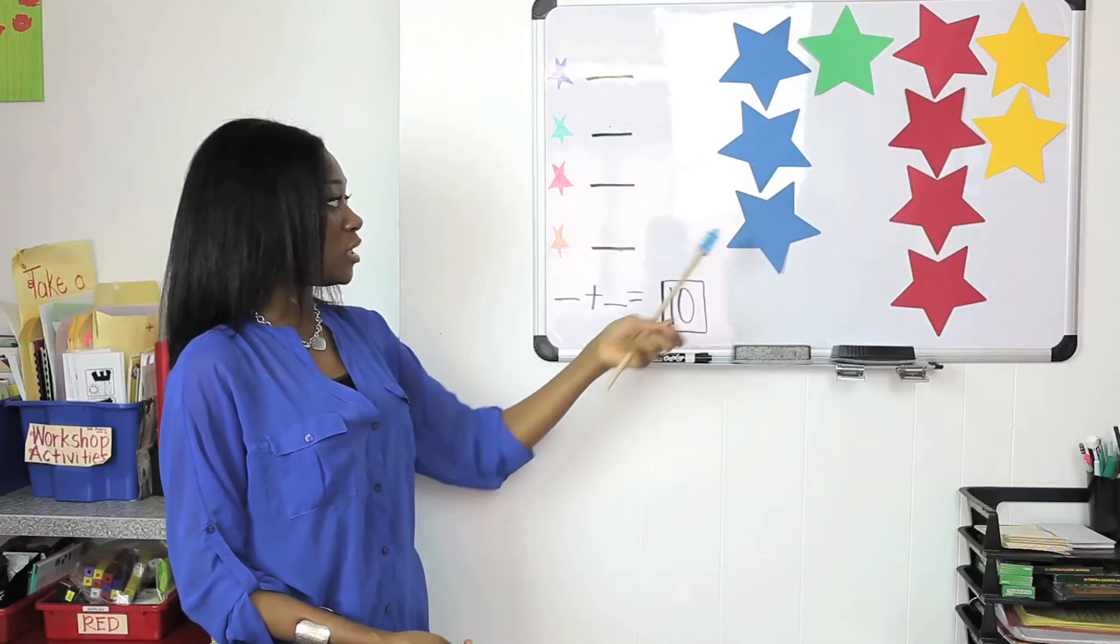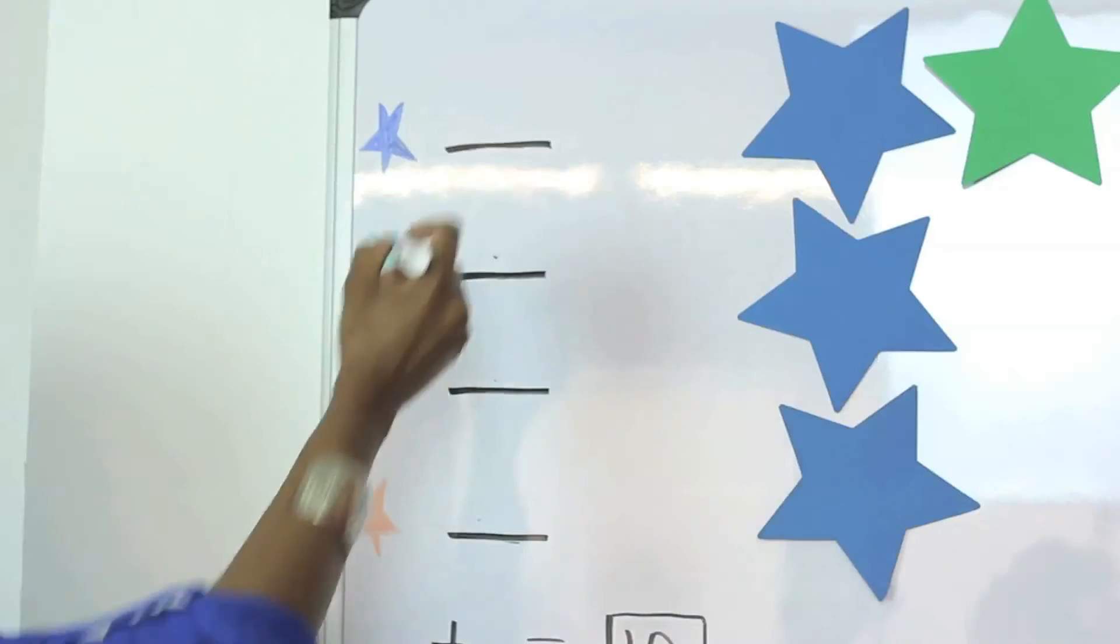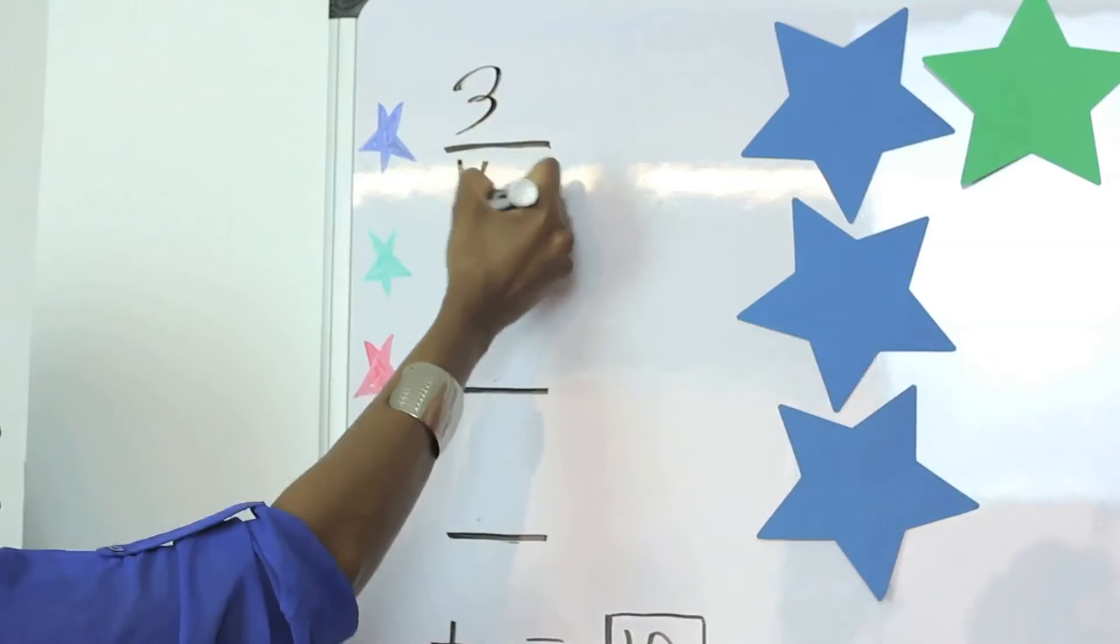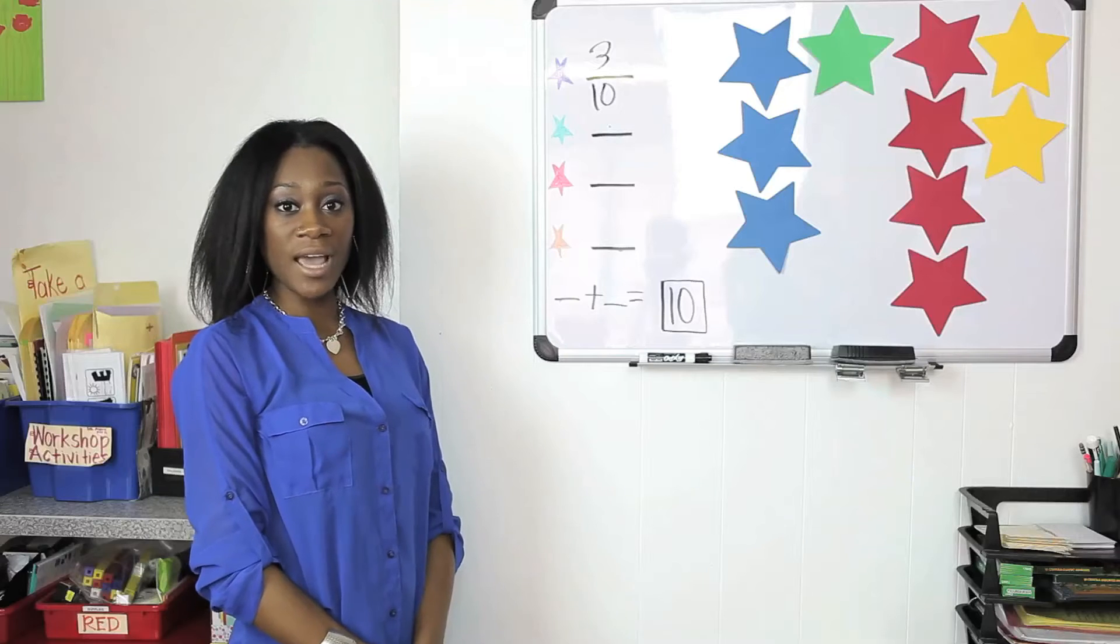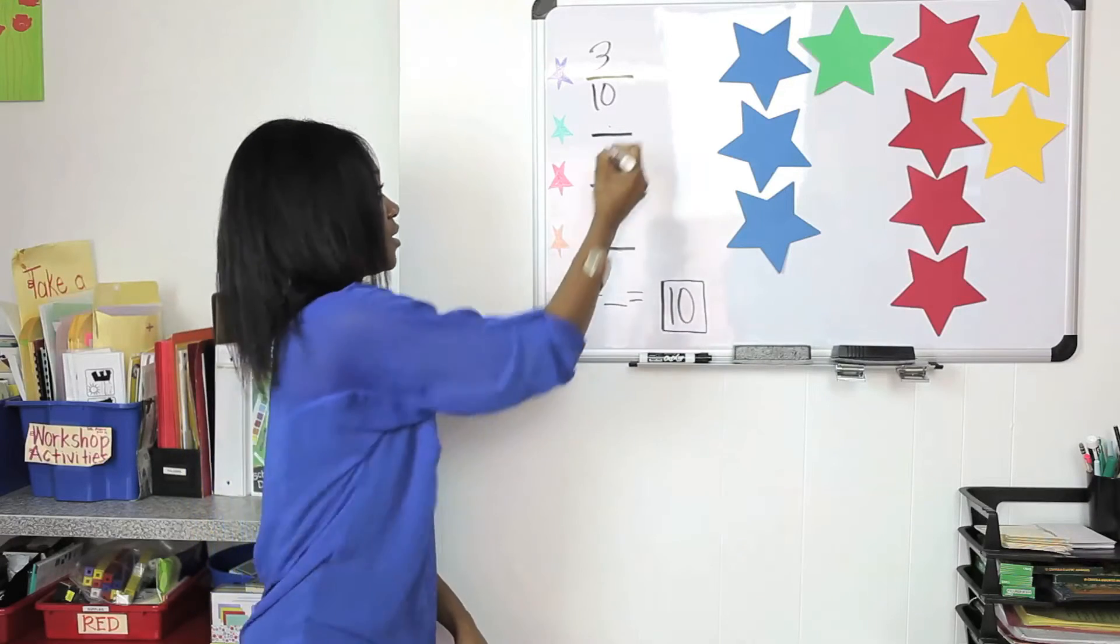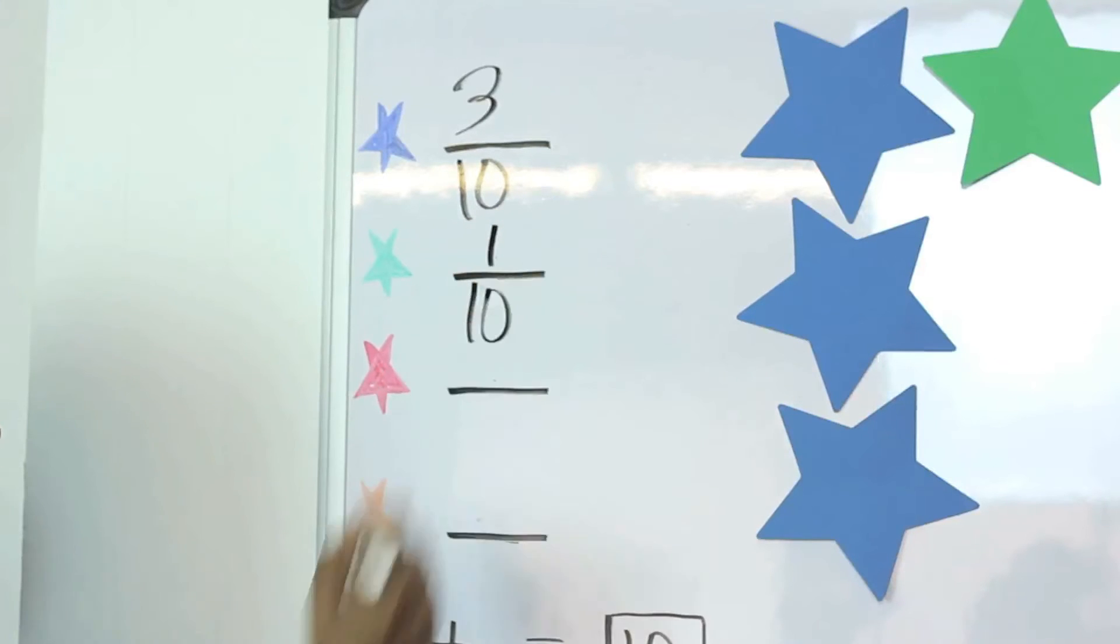Next you'll ask them how many blue stars do they see? And they should tell you three tenths. Next you're going to ask them how many green stars do they see? And they should tell you one tenth.